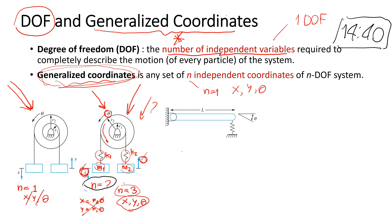How about this example? How many degrees of freedom? One. Thank you, Lawisha. This system has one degree of freedom.